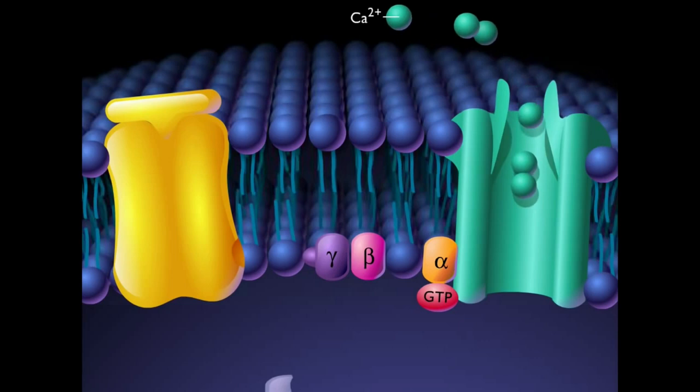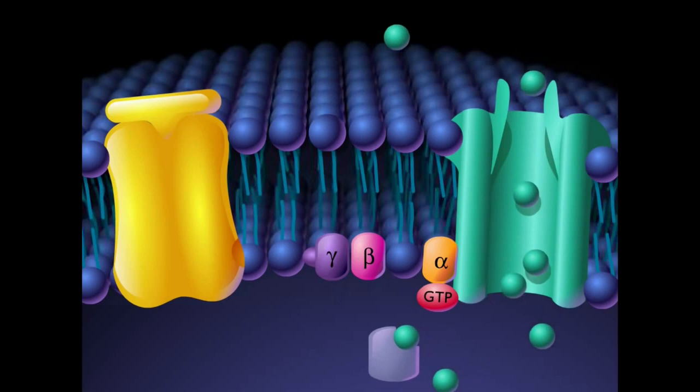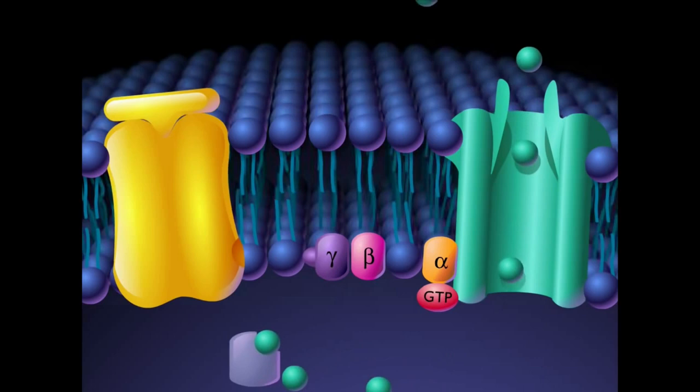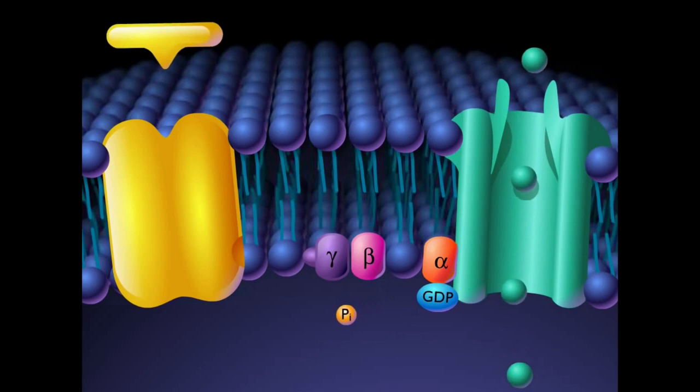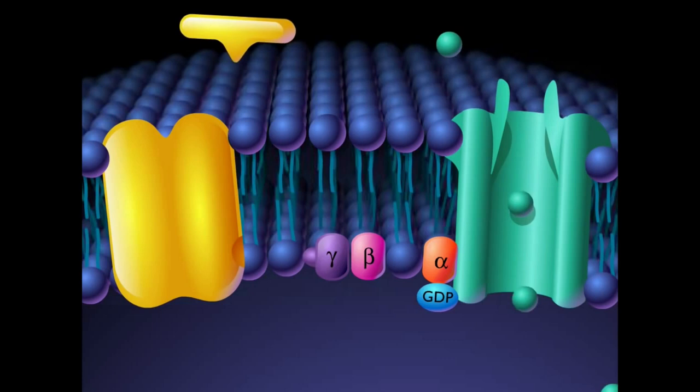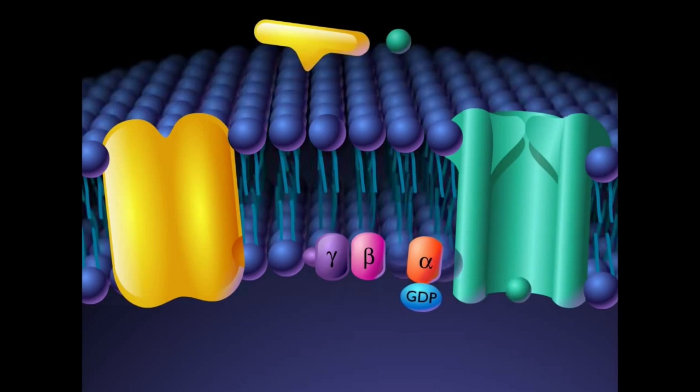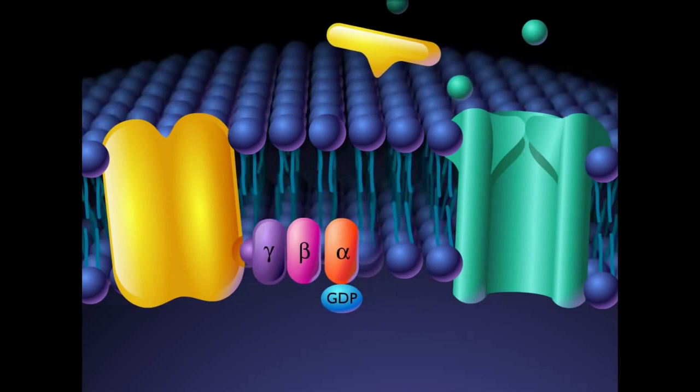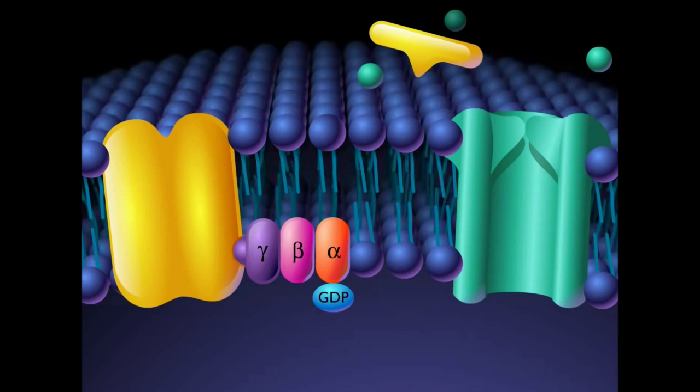A calcium ion channel opens, allowing calcium ions to diffuse into the cell and combine with calmodulin, producing the cell's response to a ligand. Phosphorylase activity removes a phosphate from GTP, leaving GDP bound to the alpha subunit. The inactivated alpha subunit separates from the calcium ion channel, the channel closes, and the alpha subunit recombines with the gamma and beta subunits as the G protein recombines with the receptor.